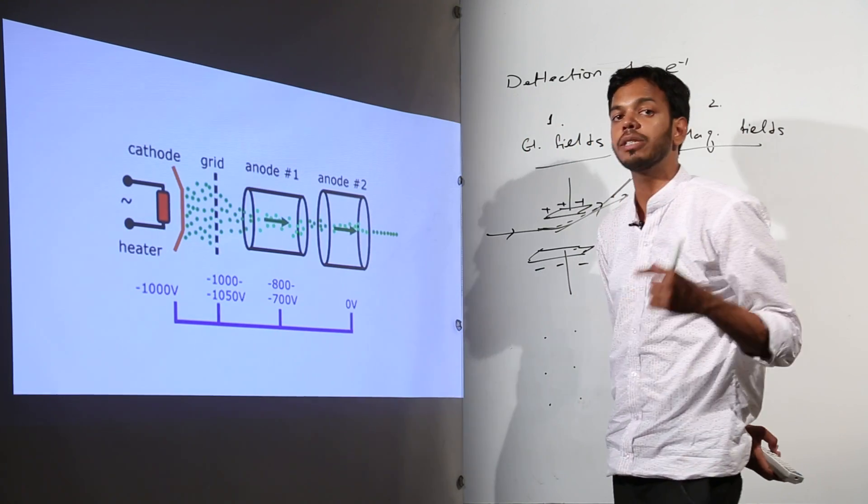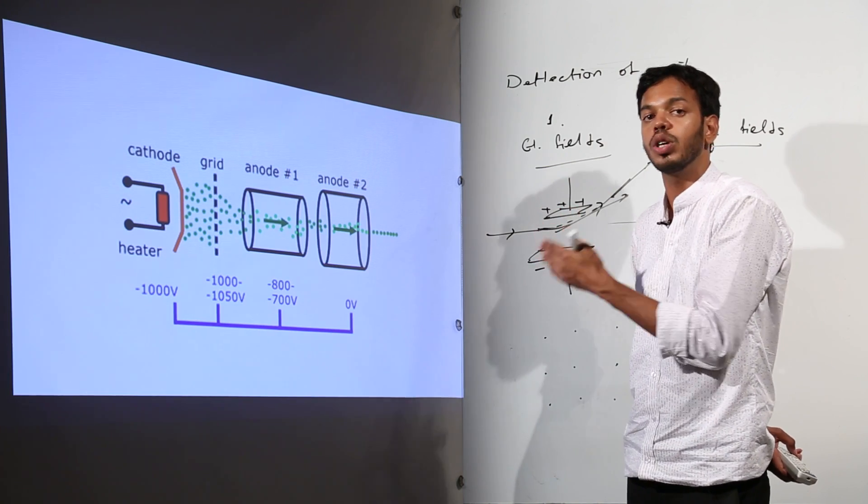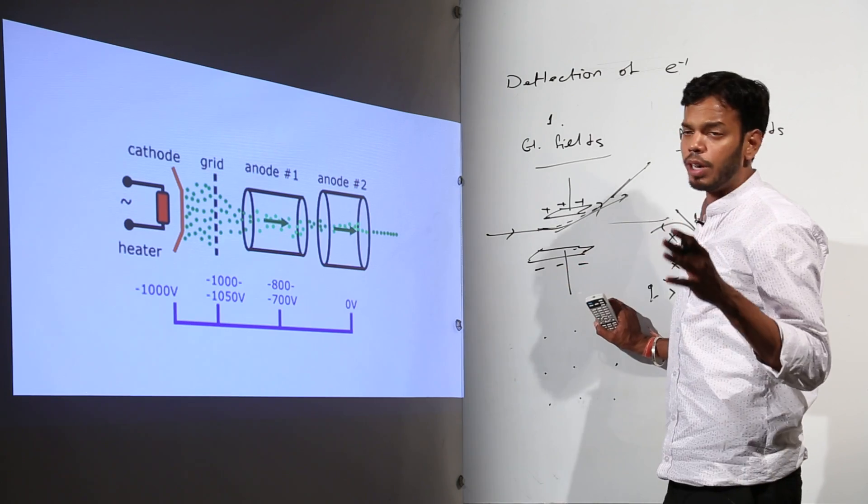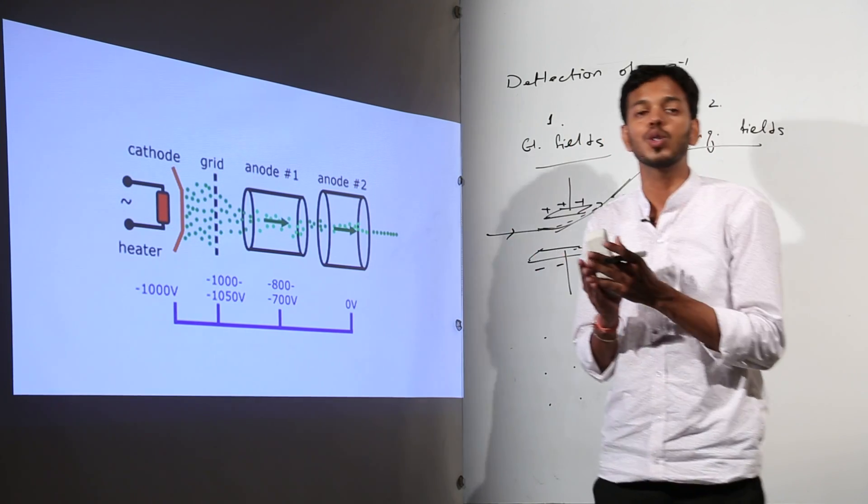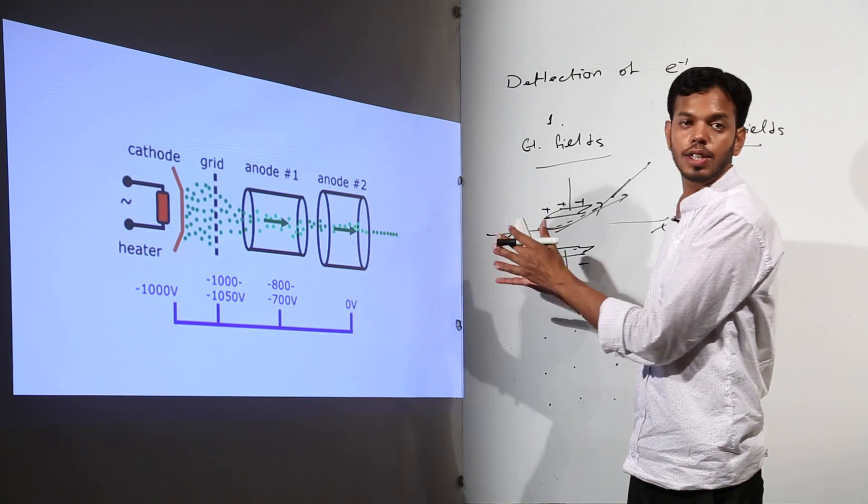So that is why it is called electron gun because it is made to make electrons to do what they are made to do. So this was a little jumble of what basically I just wanted to say that electrons are supposed to go in a focused pattern and this is what electron gun is doing.